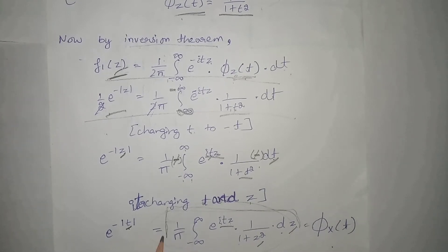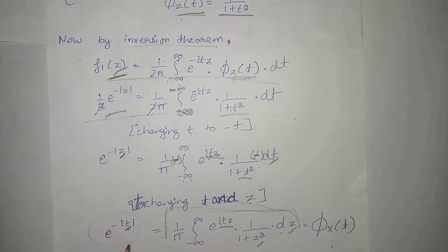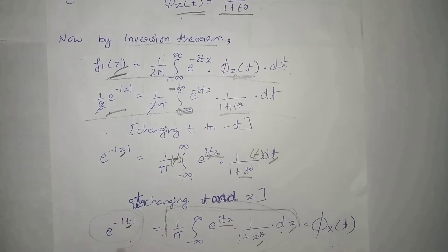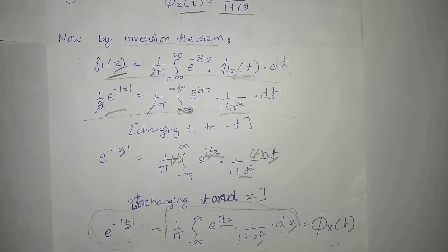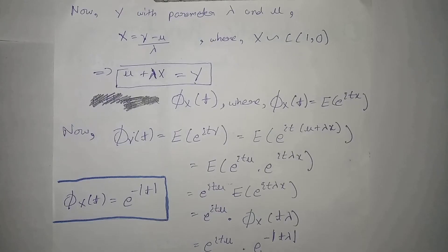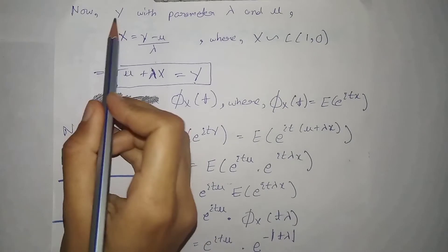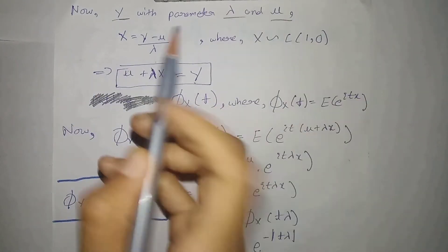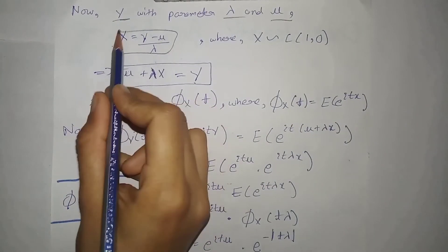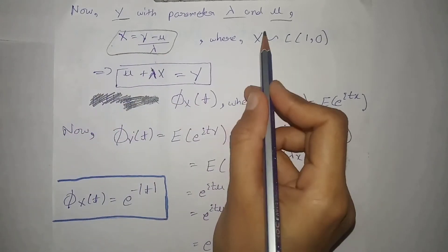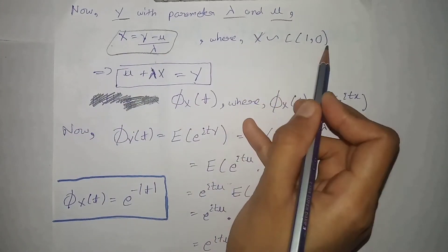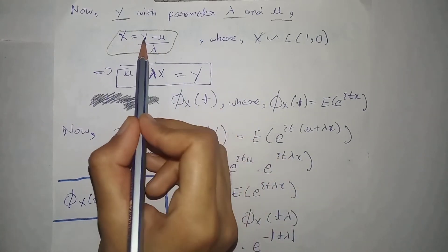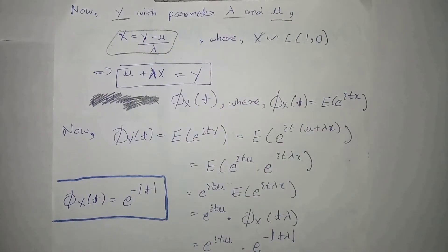This characteristic function of the standard Cauchy variate is equal to this value. Now we will find the characteristic function of the y Cauchy variate with parameters lambda and mu. The relation between x and y is such that x belongs to the Cauchy distribution with parameters 1 and 0, and y belongs to the Cauchy distribution with parameters lambda and mu. From here we can extract y's value.